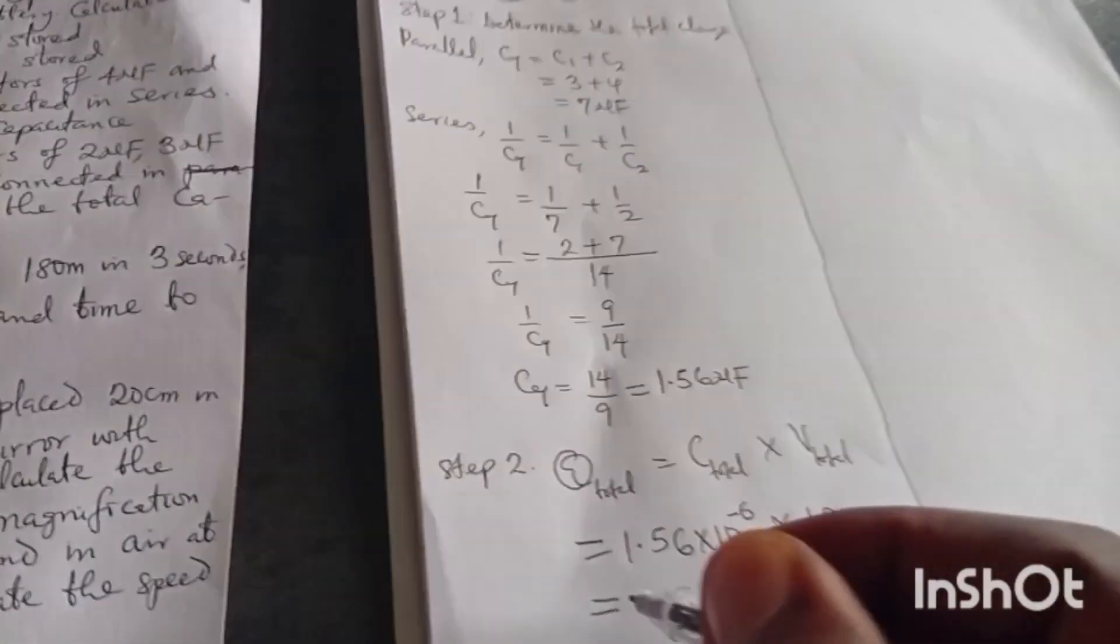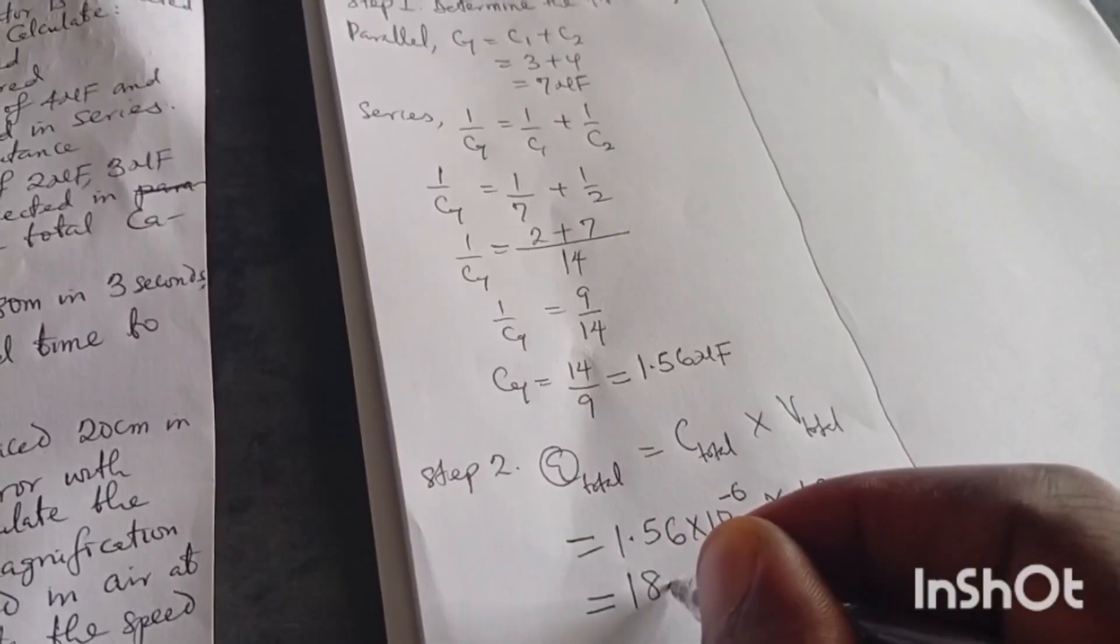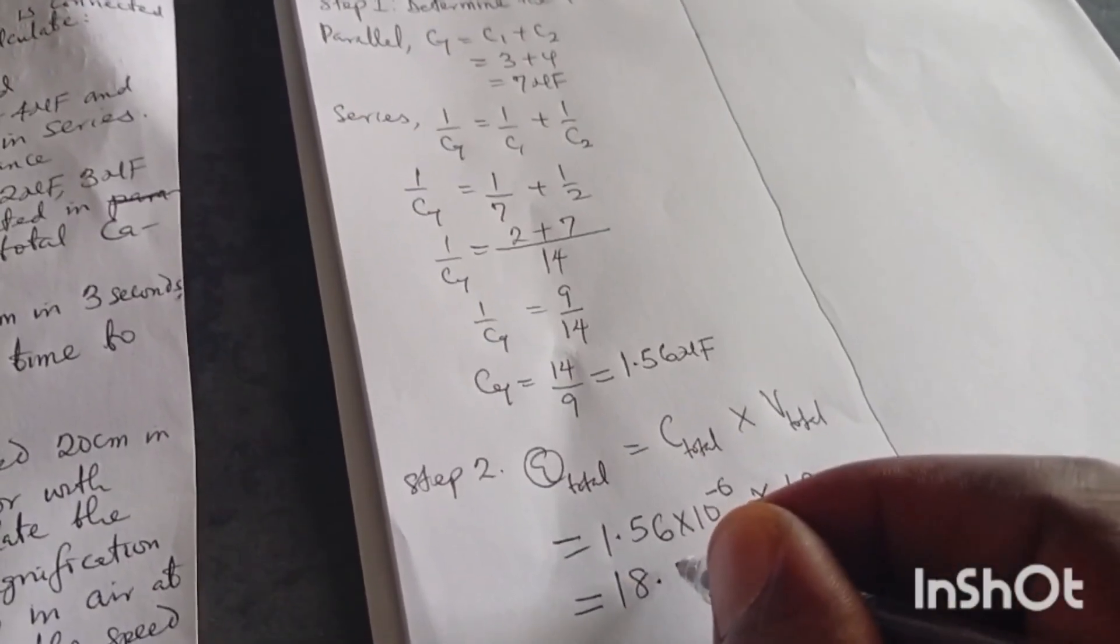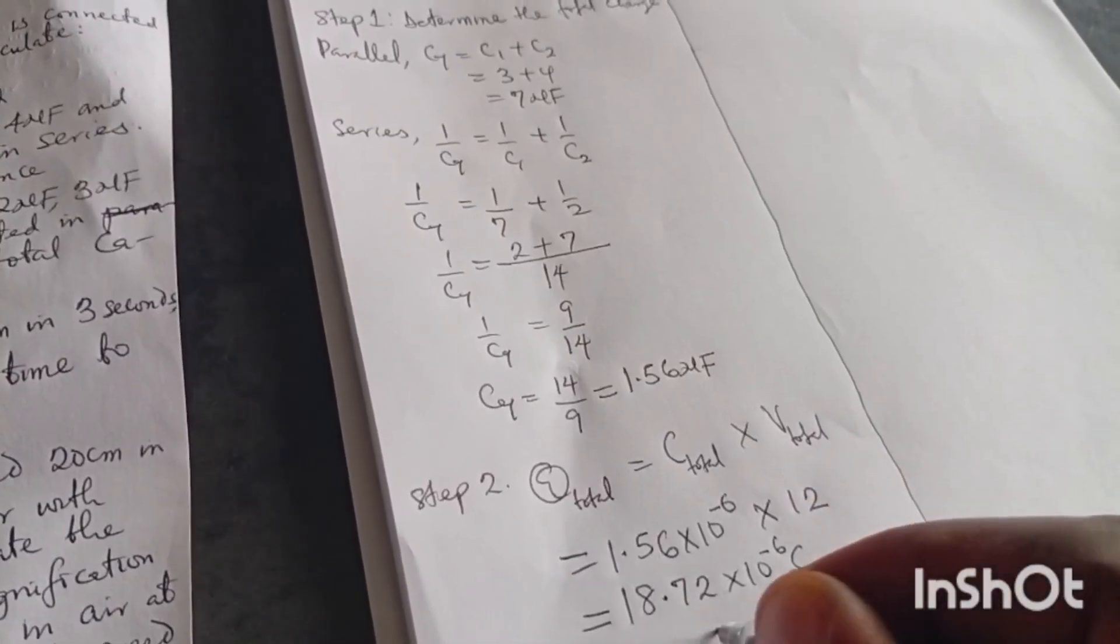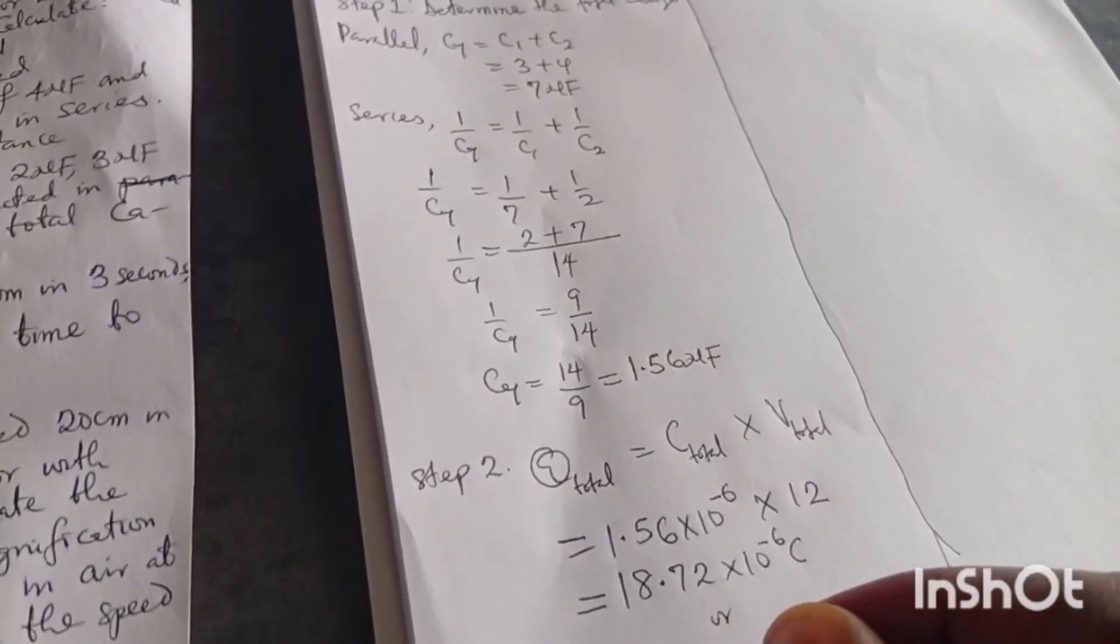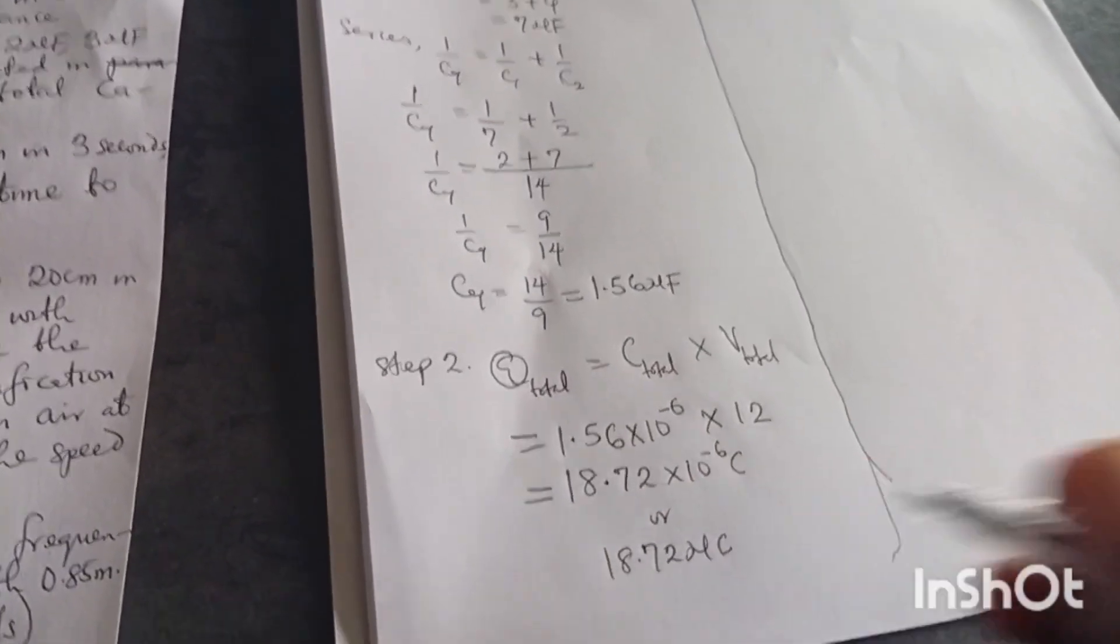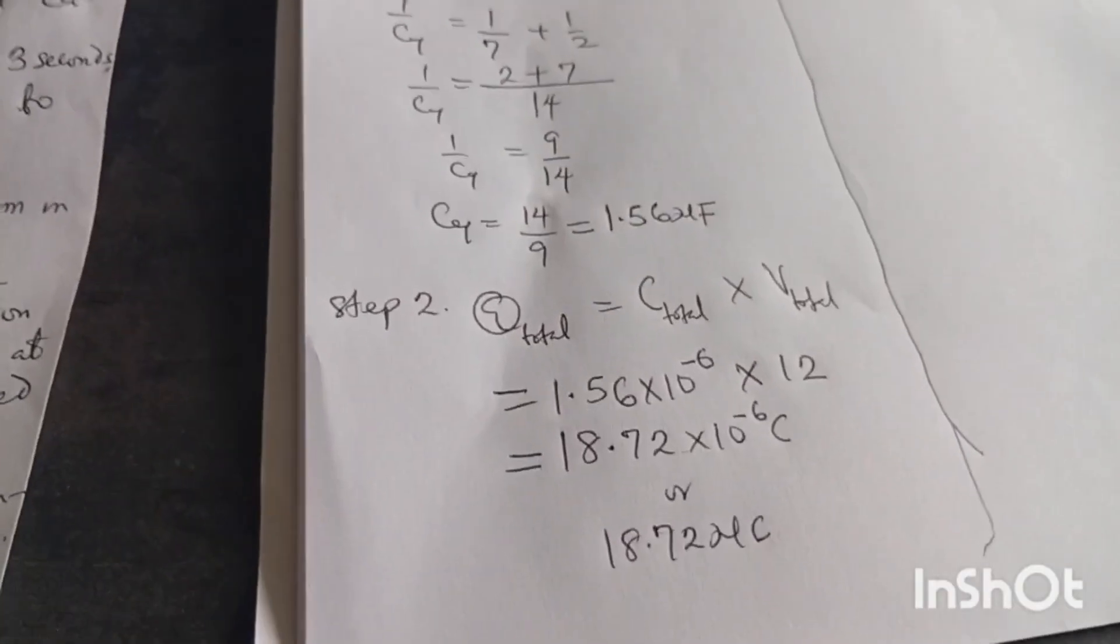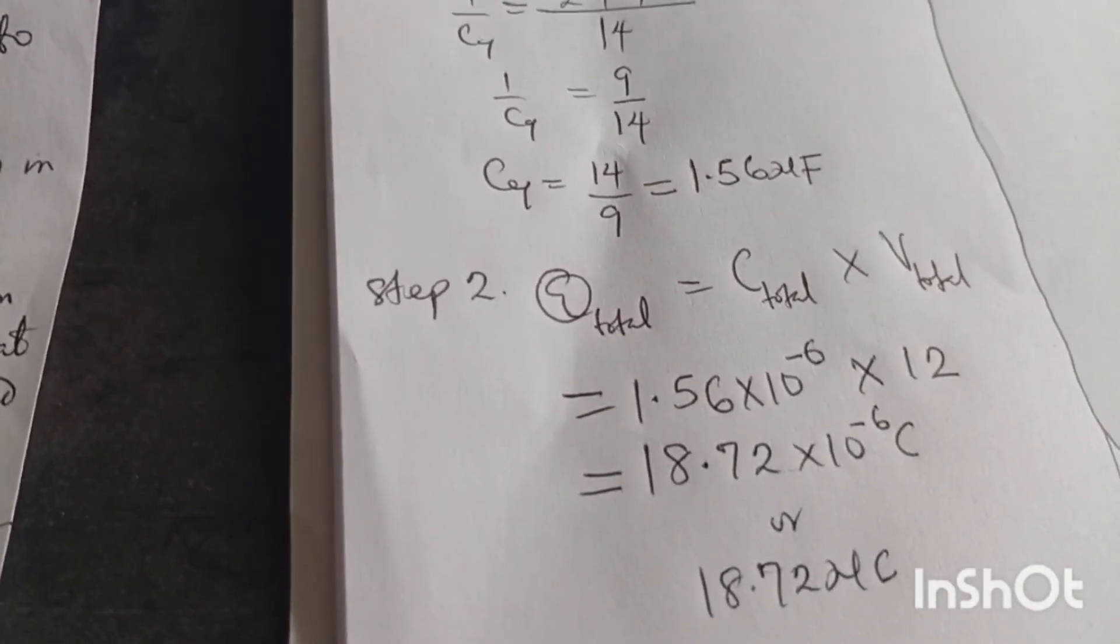So putting the two together, when you put the two together with your aid of calculator, I will be having 18.72 times 10 to the minus 6 coulombs, or you say 18.72 microcoulombs. And that's how we settle that. But we have not finished the question.